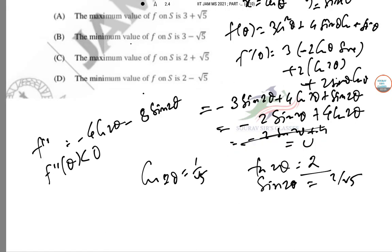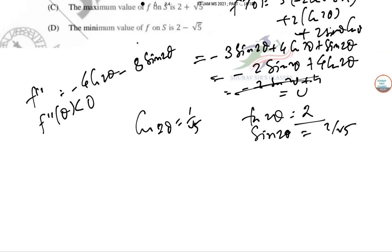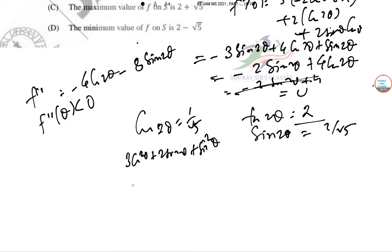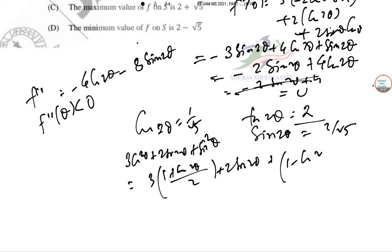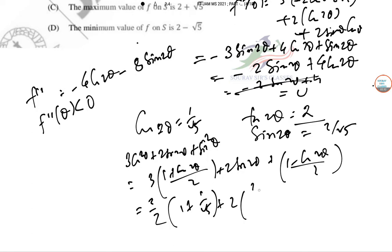To find the maximum value, we substitute back: 3cos²θ + 2sin(2θ) + sin²θ. Writing cos²θ = (1 + cos2θ)/2 and sin²θ = (1 − cos2θ)/2, and replacing with 1/√5 and 2/√5, we get the maximum value as 2 + 2/√5, i.e., 2 + √5 after simplification.